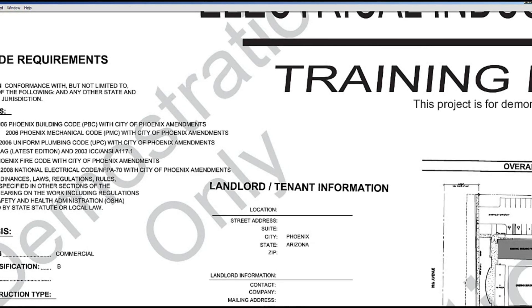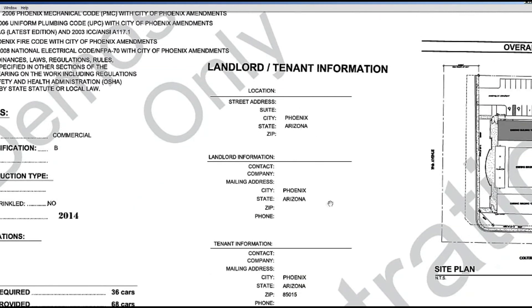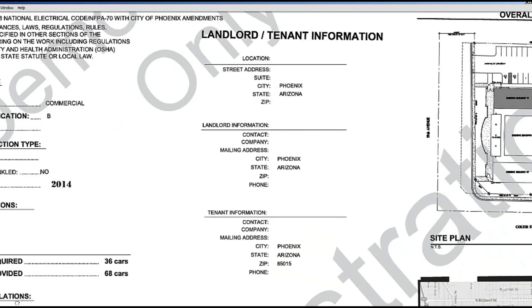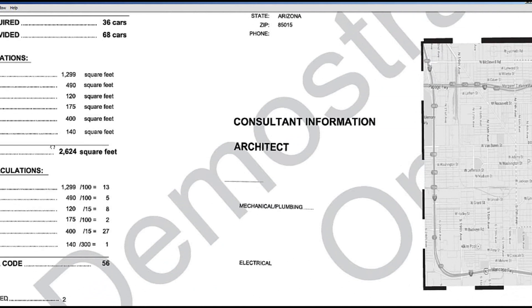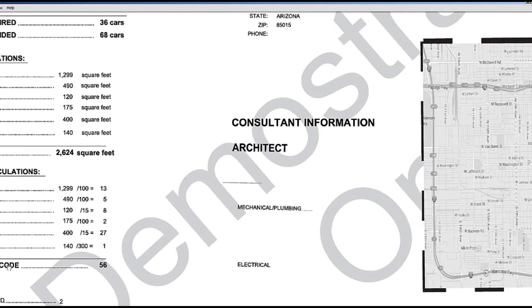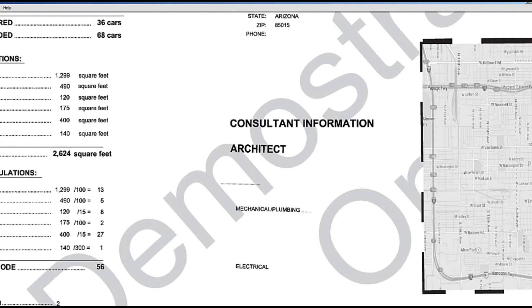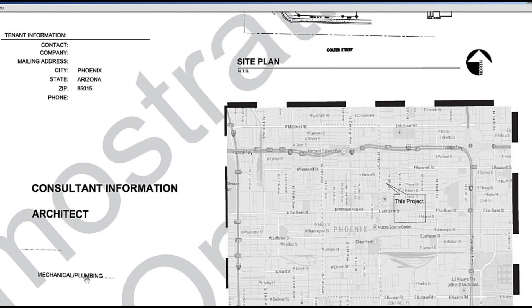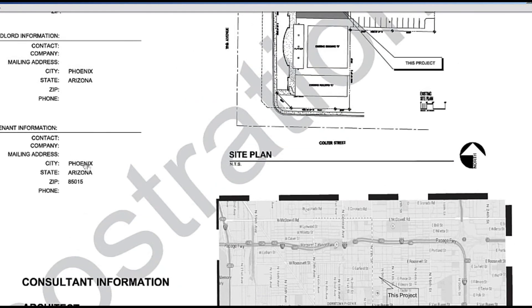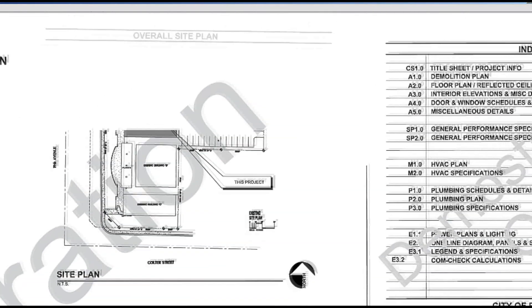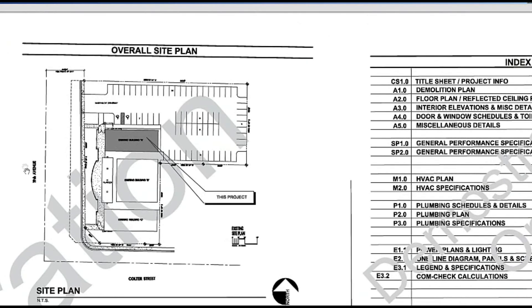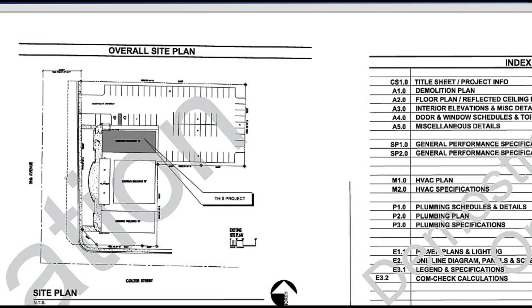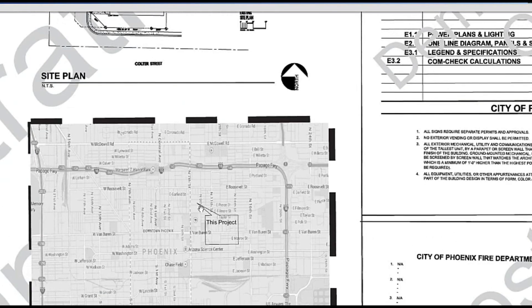Landlord-tenant information isn't that important — we go to work, we know where it's at, we know what we've got to do. Consultant information — architect, mechanical, plumbing — I don't have any of that filled in here because it is a fake job. This is all stuff that's on these front pages just to give you an idea of what's going on. It doesn't hurt to get to know the job and know about how big the place is. Now this one here — the overall site plan — is pretty important.